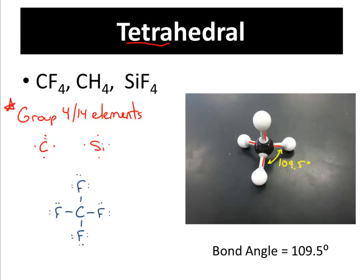They have four outer shell electrons, and therefore it'll take four more electrons to fill up their outer shell. Silicon is another element, in addition to carbon, that can bond with four electrons on the outside. So if you see four of any element around something, you know the shape has to be tetrahedral — that's the only shape it can possibly be. Every single bond has a bond angle of 109.5 degrees.